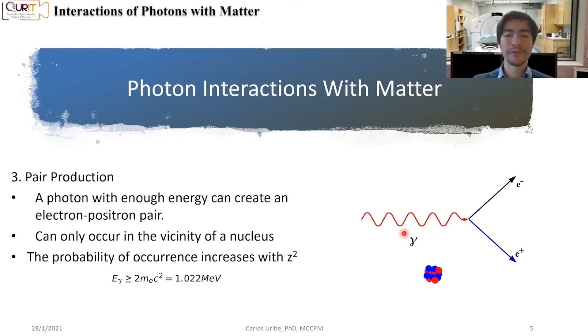Another process of photon interaction is what we call pair production. Now, you have a photon that has some energy. It has to be enough to create an electron and a positron pair. So if you want to create an electron and a positron pair, you know that you at least need to have the energy of those two rest masses times c squared. So that initial photon has to have an energy of at least 1.02 MeV. Now, this is a process that only occurs in the vicinity of a nucleus. It cannot happen unless it's in the vicinity of a nucleus.